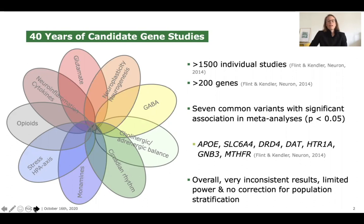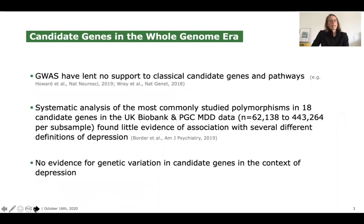Most of these studies were pretty small, and even in large meta-analyses, only seven common variants showed significant association with the MDD phenotype — really not much more than would be expected by chance. Overall, results were very inconsistent, and the studies had limited power and did not correct for population stratification. The candidate genes that were suggested all have minor allele frequencies and odds ratios that would make them detectable in current GWAS. However, current GWAS have not lent support to either the classical candidate genes or the pathways they are implicated in.